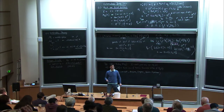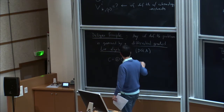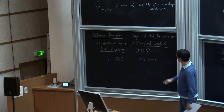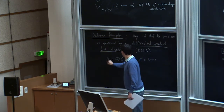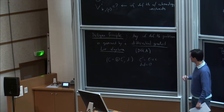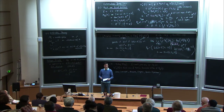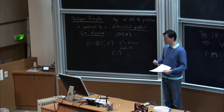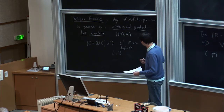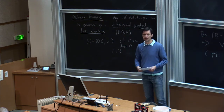Understanding the local structure of moduli spaces falls under a very general principle due to Deligne. This principle says that any infinitesimal deformation theory problem is governed by a differential graded Lie algebra — I will abbreviate this as a DGLA. A DGLA is a graded vector space with a differential, making it a complex, and a Lie bracket. The axioms are very similar to the usual ones, except now they are graded: there's a graded skew-commutativity, a graded Leibniz rule, and a graded Jacobi rule.